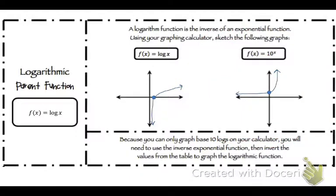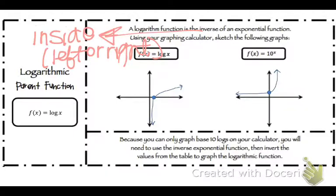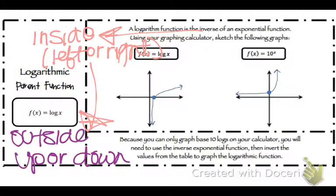I also want you to write this: inside goes left or right. Write that up in the blank space. Inside goes left or right — this will make more sense once we get to ones where we actually have to do this. Outside is up or down. So inside is left and right; outside is up and down.